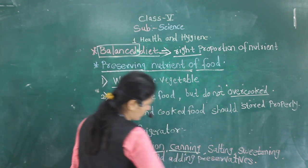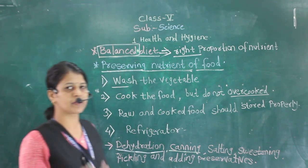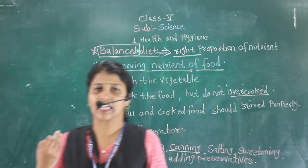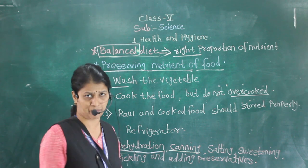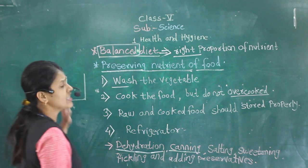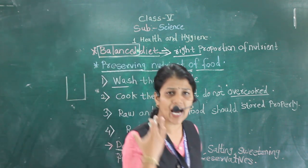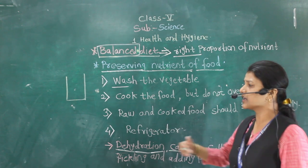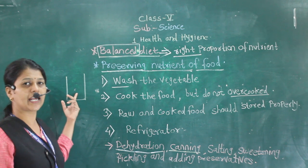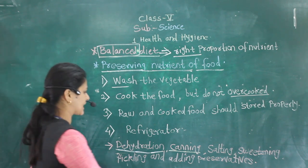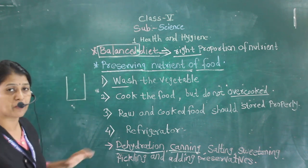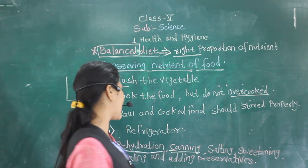Next is canning. In canning, food is placed in a container which is heated at a very high temperature. The air is removed through a valve so that not a single air particle can pass through it. That is called canning, and the food is then stored in that sealed can.